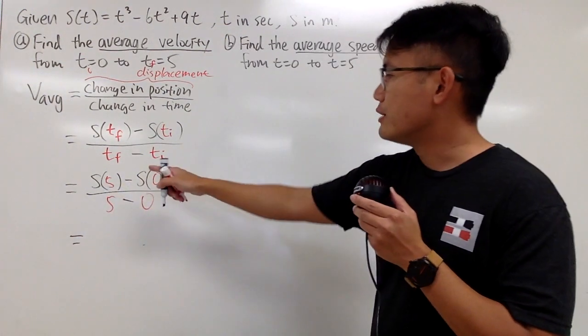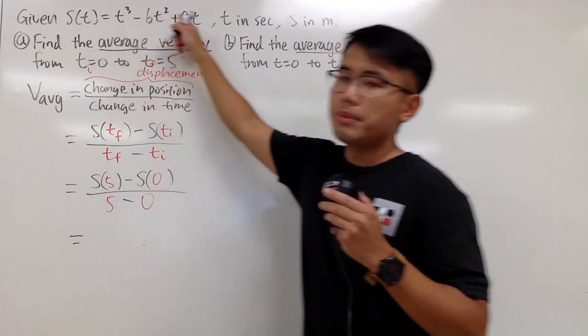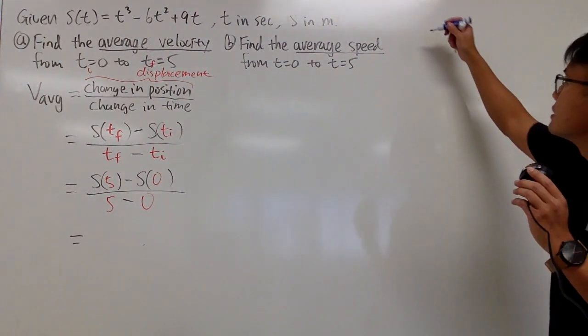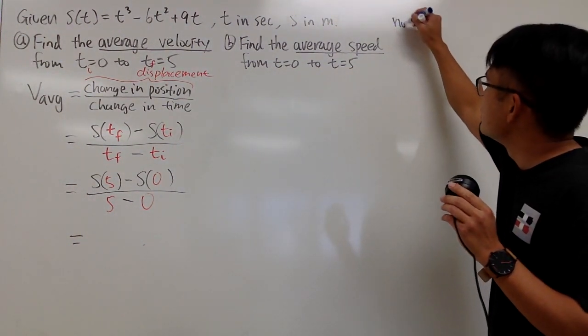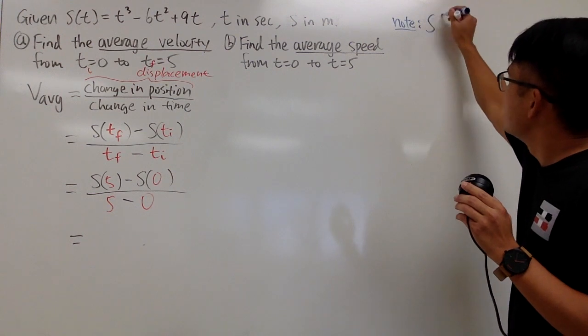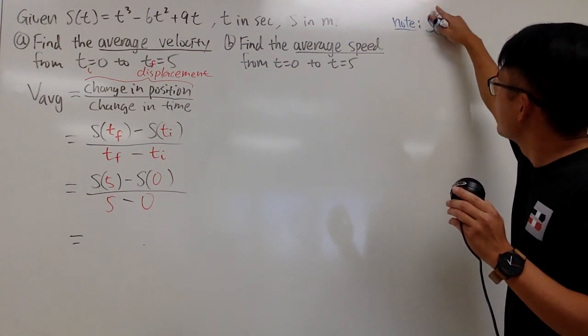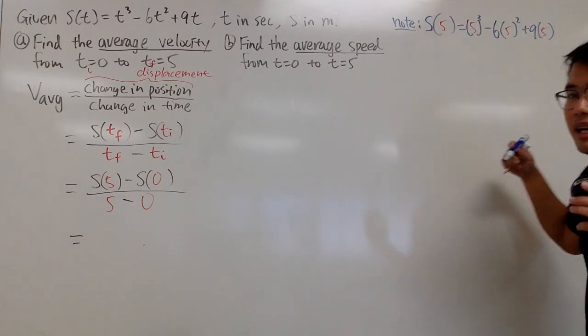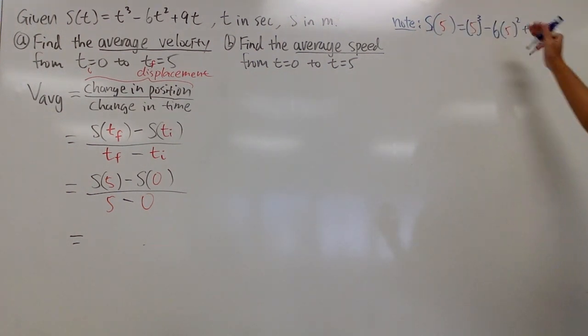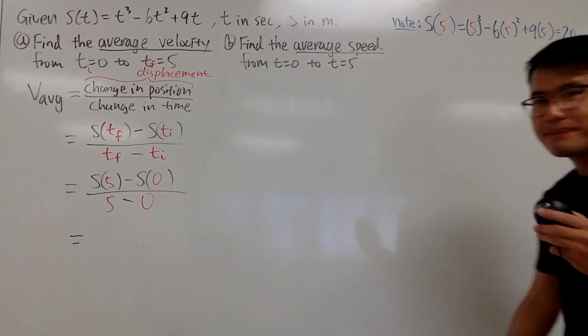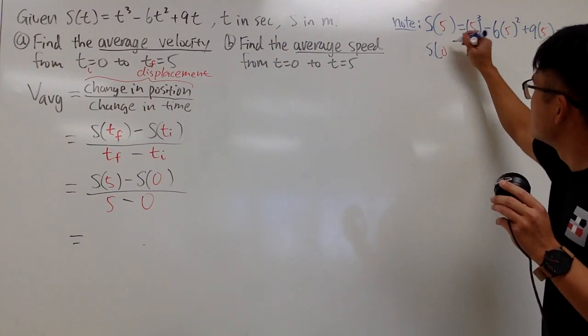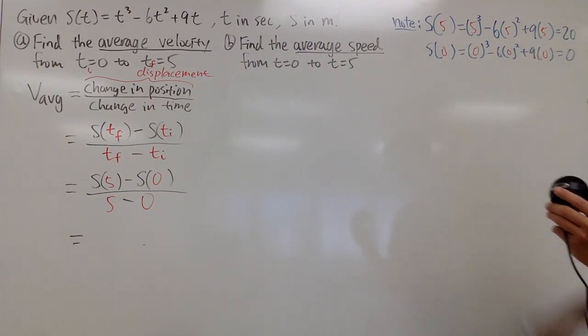To get s of 5, I just have to plug in 5 into the position function. I'll do the computation on the side. This is just scratch paper work. s of 5, and I will plug in 5 into the function. Work this out, you get 20. So that's going to be 20.